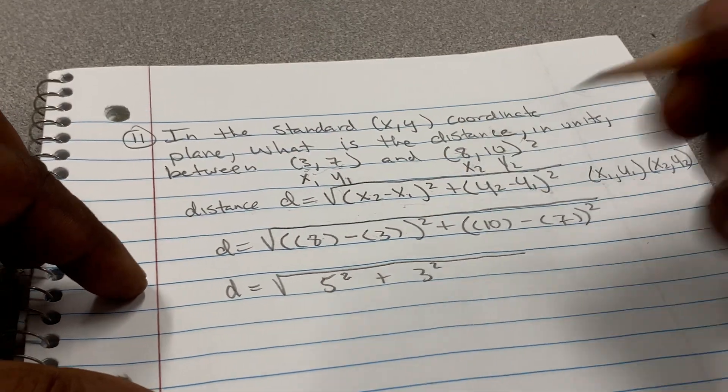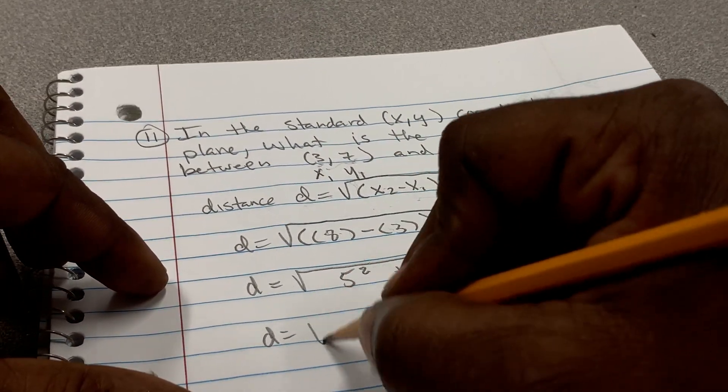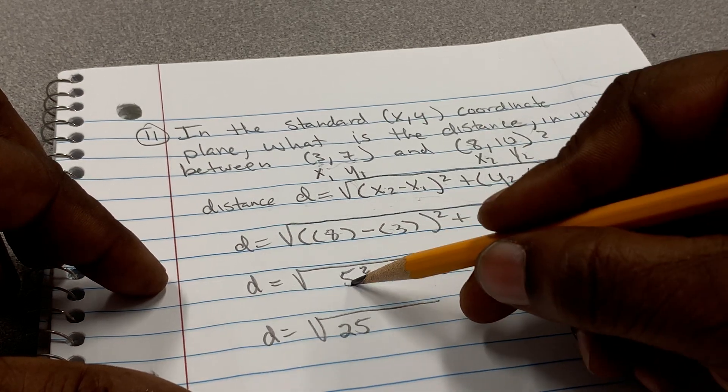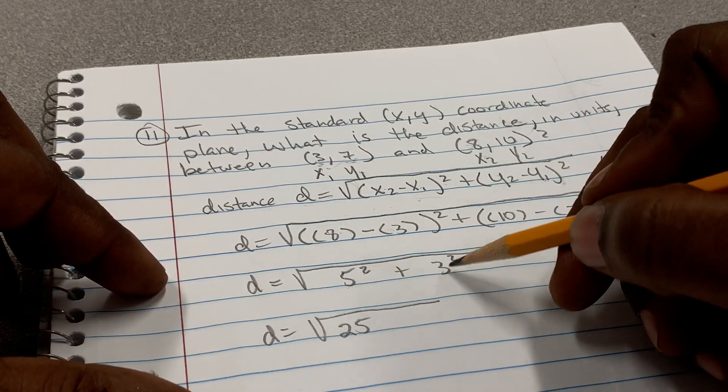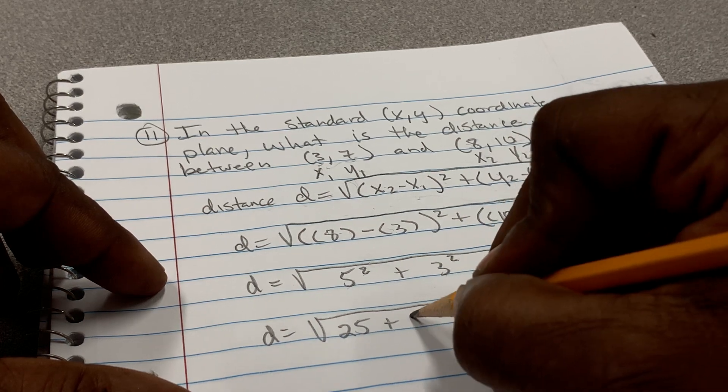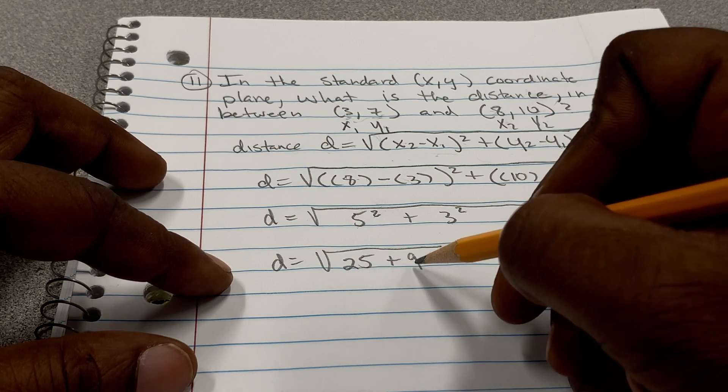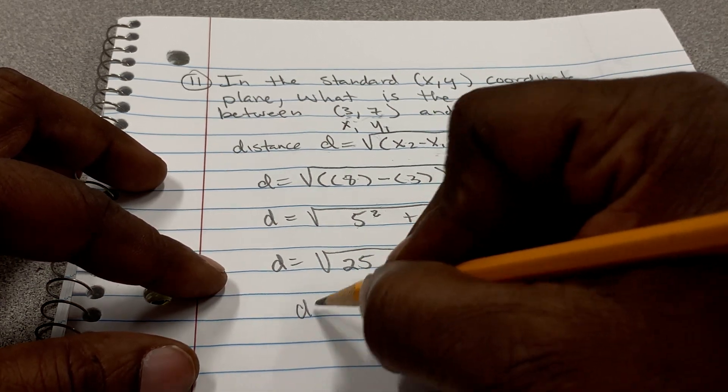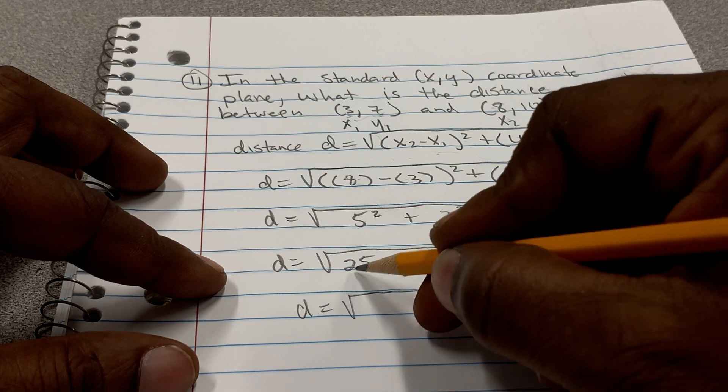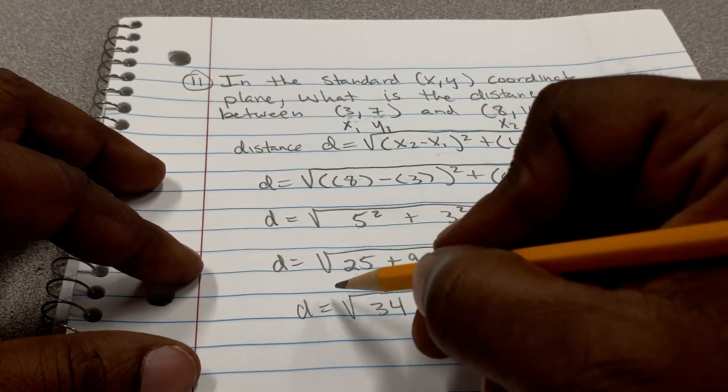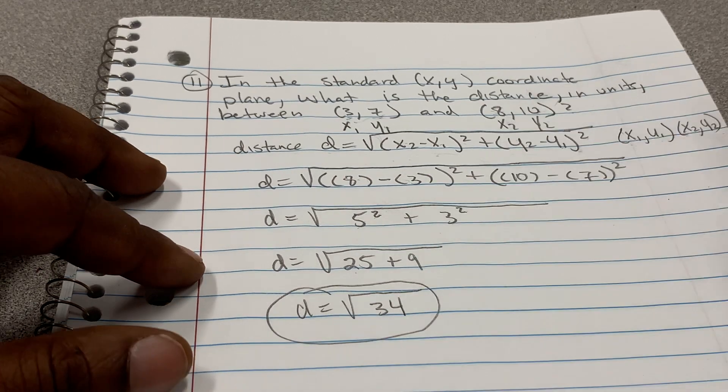So 5 squared is 5 times 5, which would equal 25. 3 squared is 3 times 3, which is 9. Now we're coming down to the end. All we have to do is add the 25 and 9. So d is equal to the square root of 25 plus 9, which equals 34. So your distance is going to be the square root of 34.